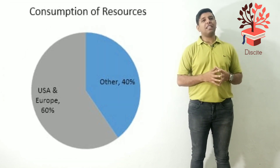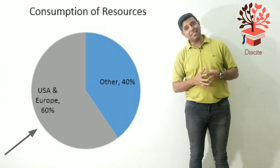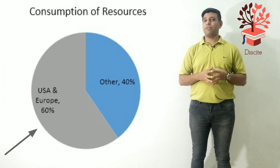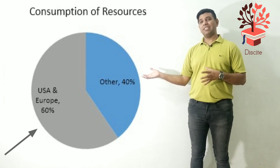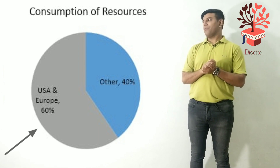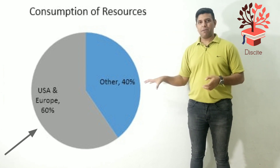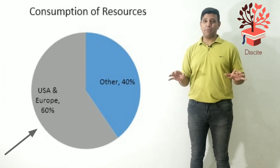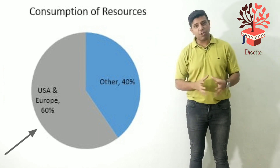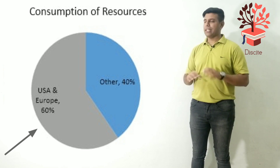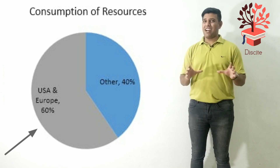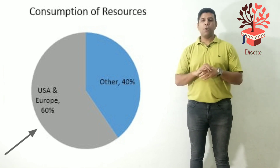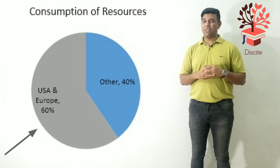If you look at the consumption of resources, 60% goes to the US and Europe together. The rest of the 40% goes to the rest of the world. Please don't make any political statements about that — you cannot give your opinion in graph writing. It's categorically forbidden. You just have to talk about what is given in front of you, even if you know the reasons behind it. You just have to describe what is given. Don't give your personal opinion or reasoning — that's not a good idea because you'll not get a good score.